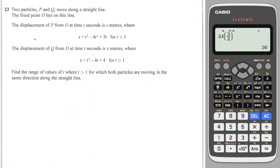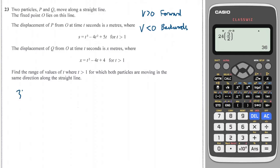Super tricky question alert. We have two objects moving along a straight line and we have the displacement of both. It says find the range of values for t, where t is greater than 1, where both particles are moving in the same direction. Let's work out the velocity of each, because if velocity is greater than 0 the object is moving forward, and if less than 0 it is moving backwards. Differentiating the first displacement gives 3t squared minus 8t plus 5.